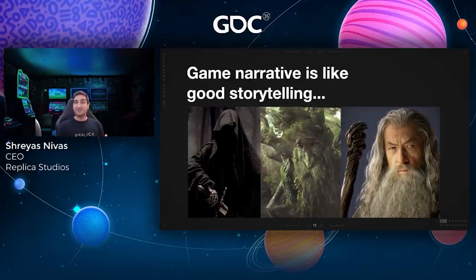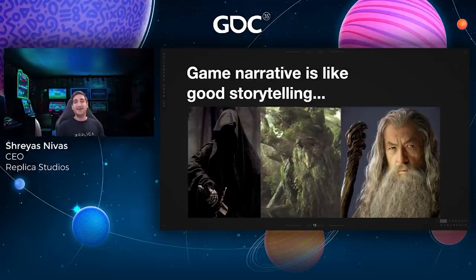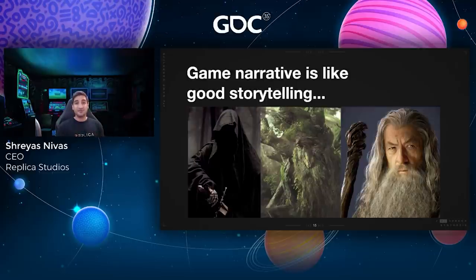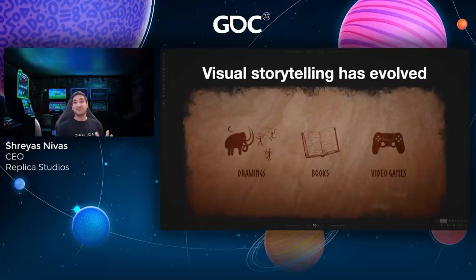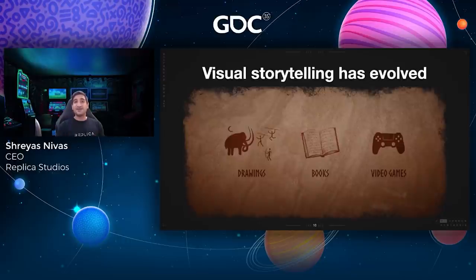When I think back to Lord of the Rings as a book, I had to imagine what all of the characters looked like and sounded like. Tolkien was amazing because he could paint pictures and movies with words. But when the movies came out, it was fantastic. We think game designers and narrative experts should really be using all of the tools and technologies available today to tell their story in the most compelling way possible. The visual side of storytelling has evolved from cave paintings through books to video games, thanks largely to advances in 3D graphics from companies like Nvidia, Epic Games, Unity, and Roblox.